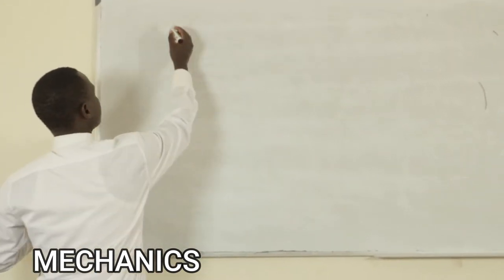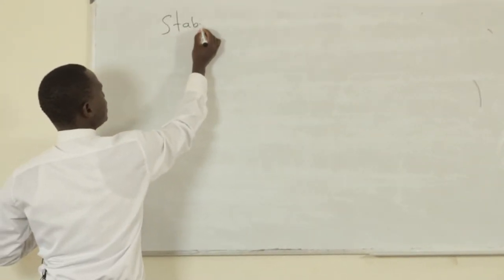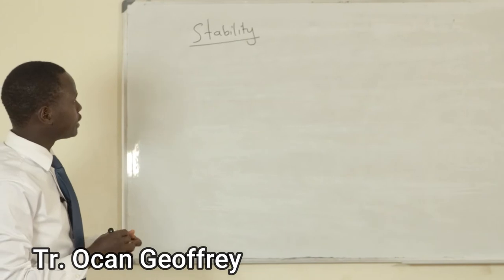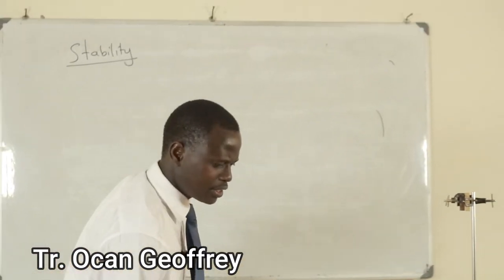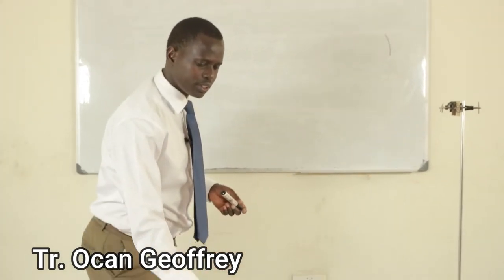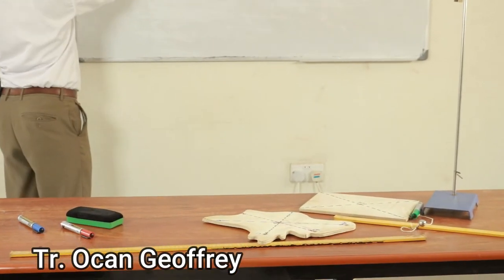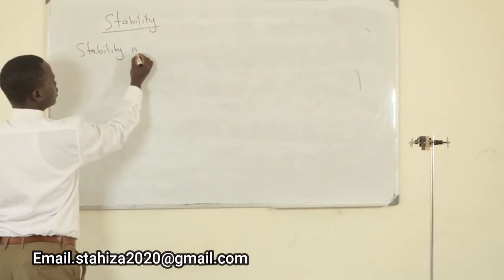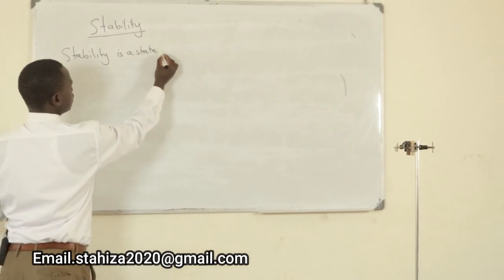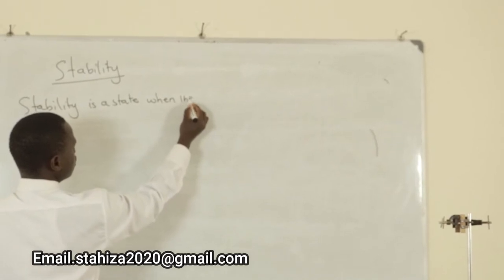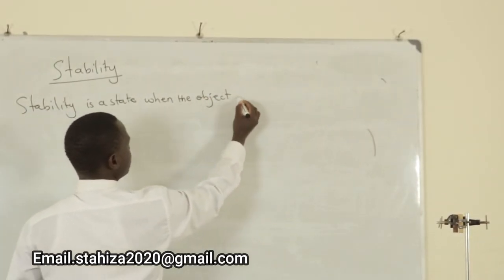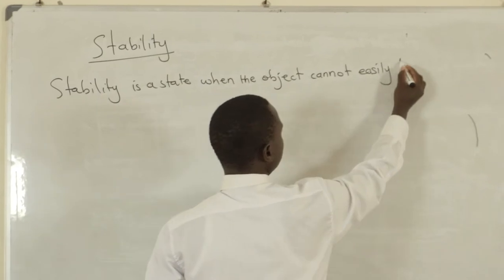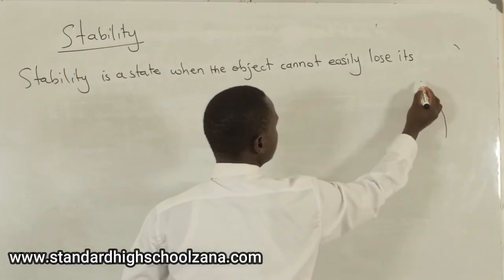Let's also talk about stability. Stability is a state when an object cannot easily lose its equilibrium.